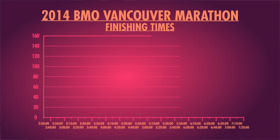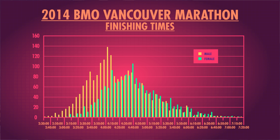Another example is the race times for some marathons. There are two big groups of people who run a marathon: those who are competing, and those that do it to prove they can. There's usually one peak around the time professional runners cross the finish line, and another when the amateurs do. While we don't know for sure that bimodal data is secretly two distributions disguised as one, it's a good reason to look at things more closely.